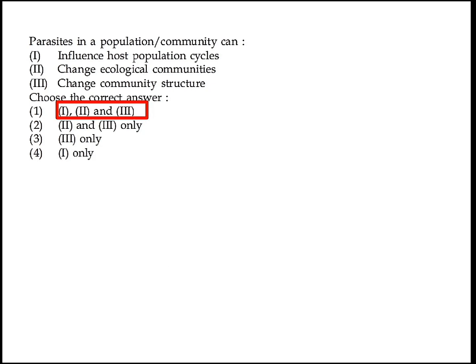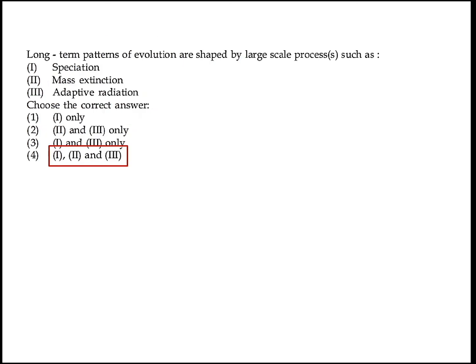Parasites in a population or biotic community can influence host population cycles, change ecological communities, and change community structure. Option 1 — 1, 2, and 3 — is the right answer. Long-term patterns of evolution are shaped by large-scale processes such as speciation, mass extinction, and adaptive radiation. Option 4 — 1, 2, and 3 — is the right answer.